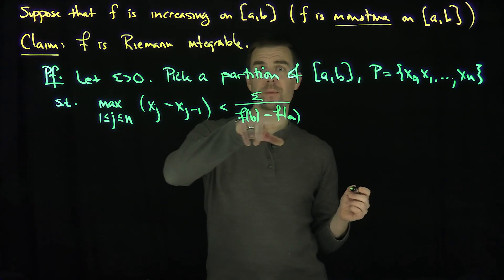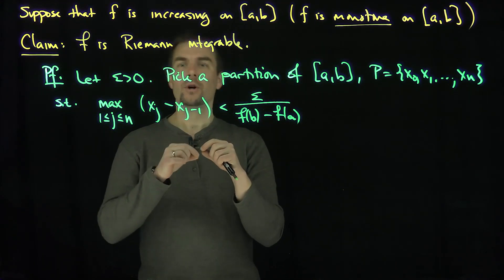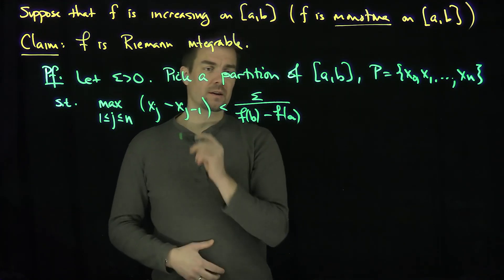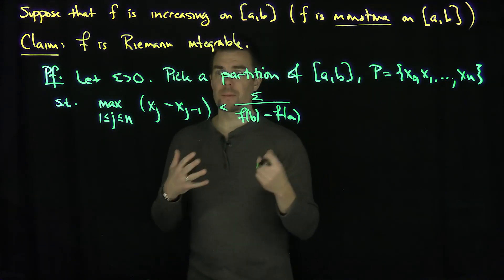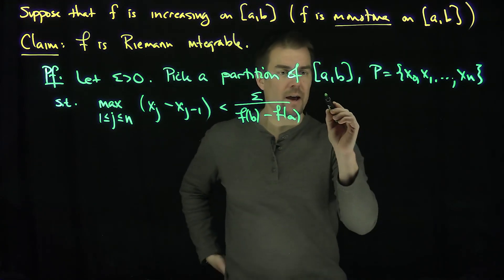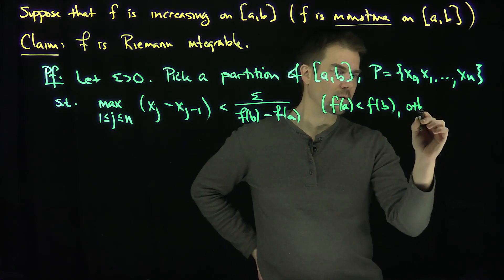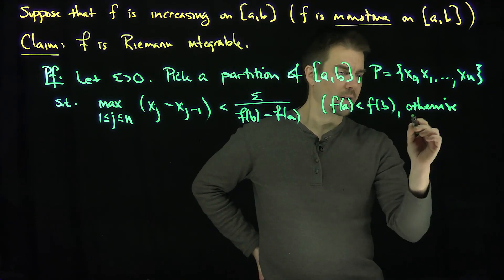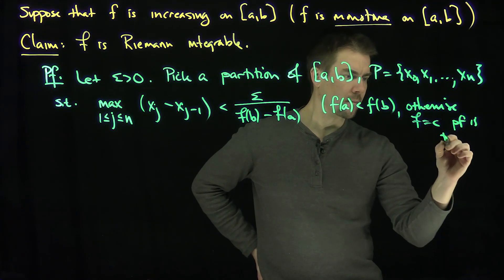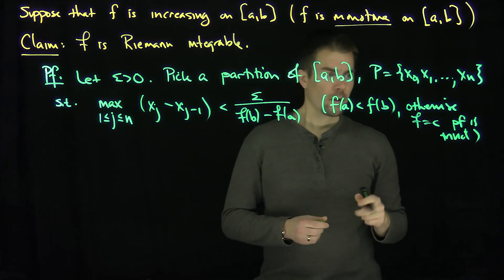Since f is increasing, f(b) is greater than f(a). If f(b) equals f(a), then f is constant, and we know constant functions are integrable, so we rule that case out. We assume f(a) is strictly less than f(b); otherwise f is constant and the proof is trivial, because the upper sum equals the lower sum for every partition.